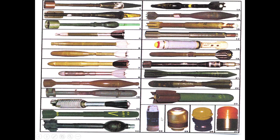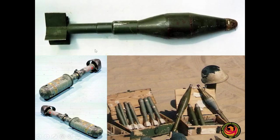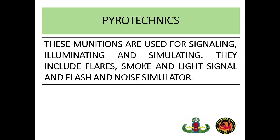These launchers below are grenade launchers — loaded into the M27. The M27 is a combination of grenade launcher and M16 rifle. We also have pyrotechnics — these munitions are used for signaling, illuminating, and simulating. They include flares, which produce light. Pyrotechnics also include smoke, light signals, splash, and noise simulators.